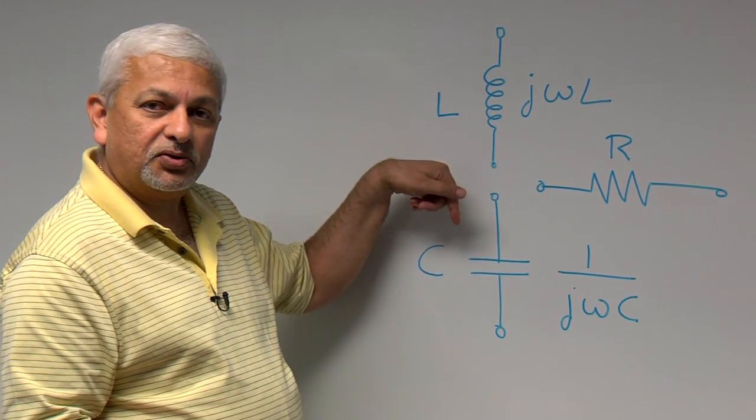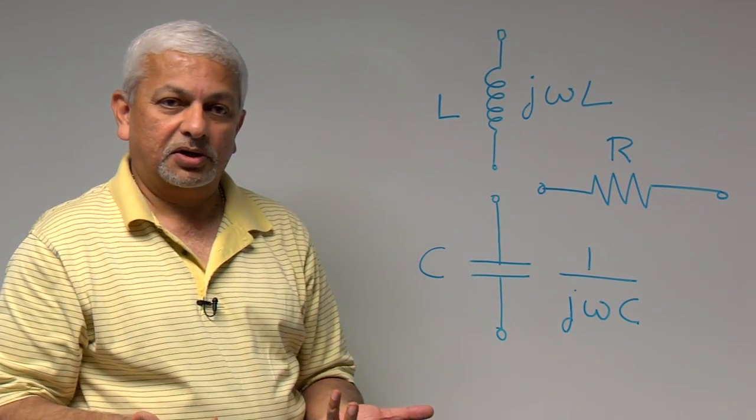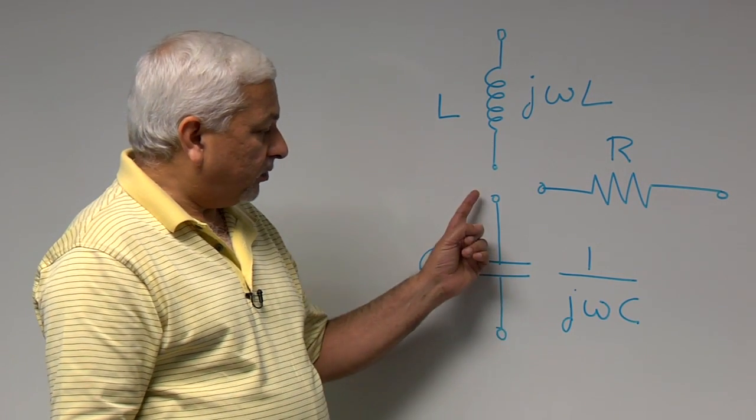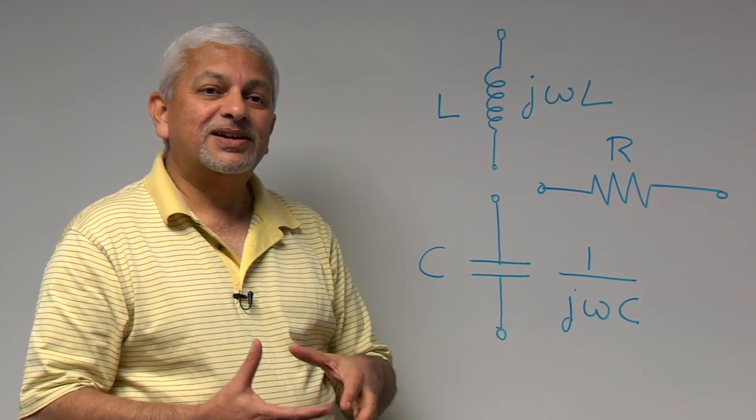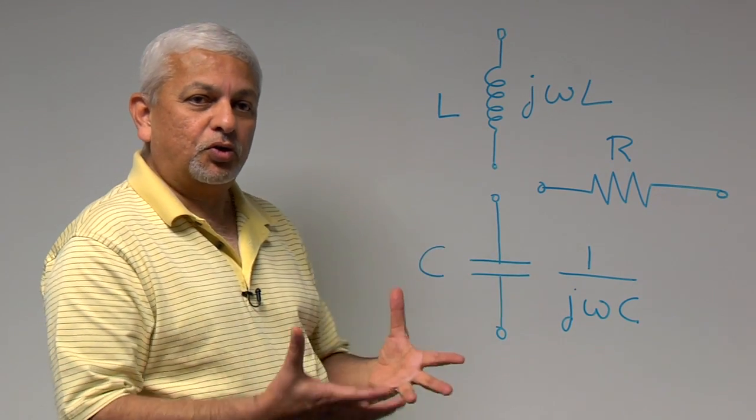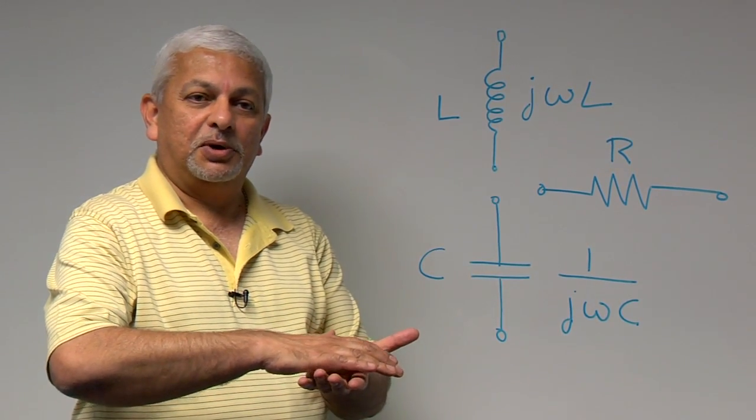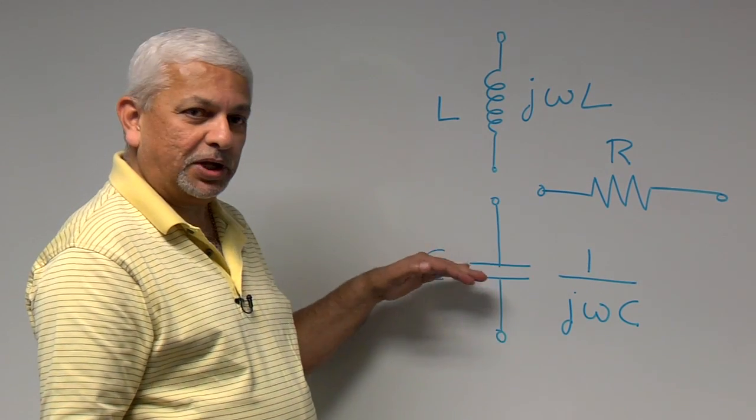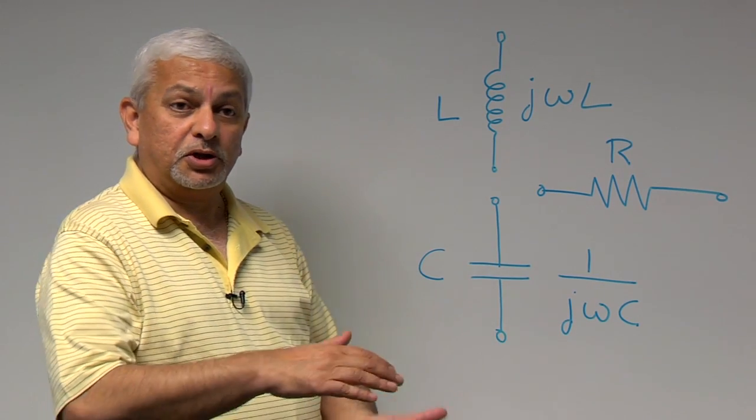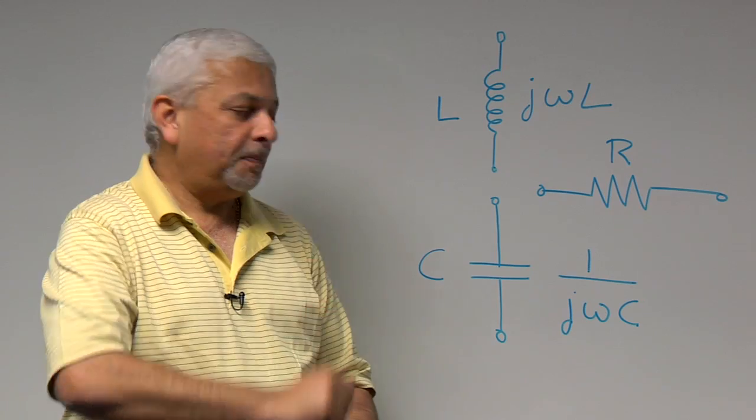The third one is a capacitor. If you try to pass current through that thing—and current is nothing but the rate at which charge flows in a particular branch of a circuit—when charge comes down here, it does not allow the charge to go through. It accumulates. It holds it for itself. This charge keeps building up on that plate. It's like two plates, so charge keeps building up. As the charge builds up, it turns out that the potential also builds up correspondingly.